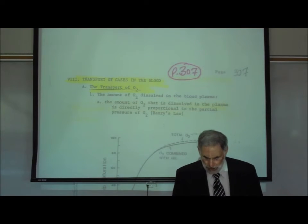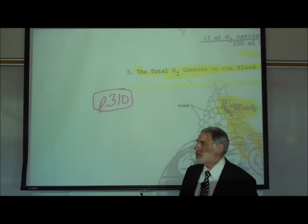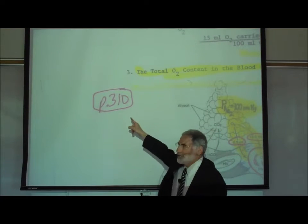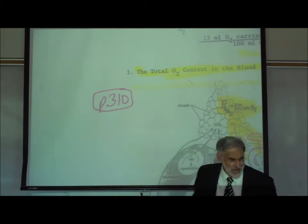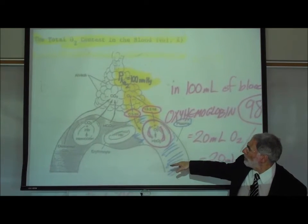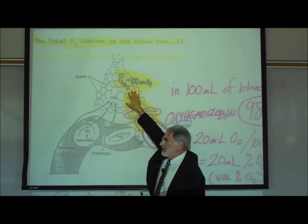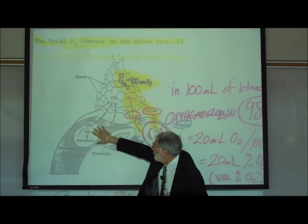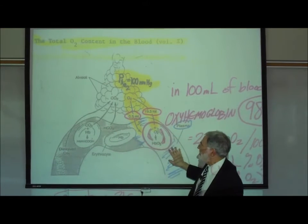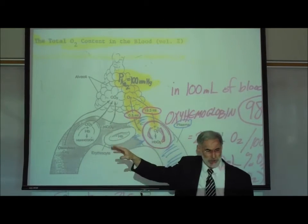The first picture we're going to look at is on page 310. At the bottom of page 310, there is a picture showing the alveoli of the lungs and a pulmonary capillary carrying blood right past these alveoli.